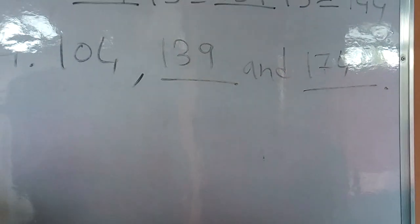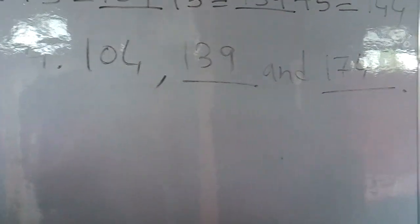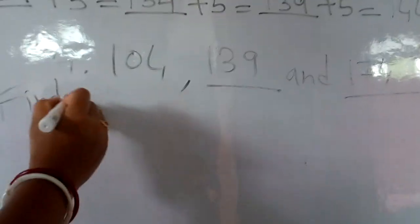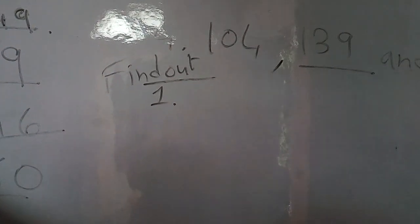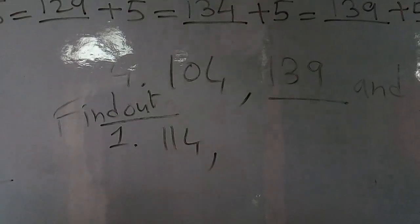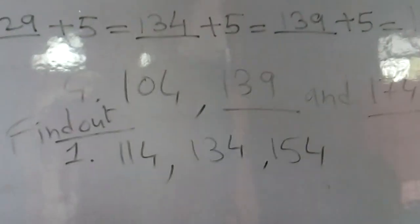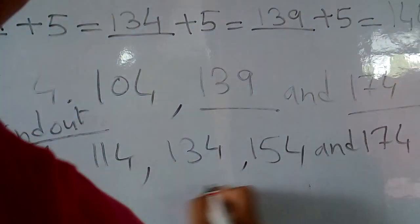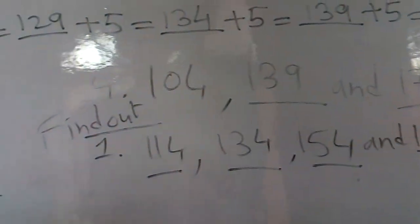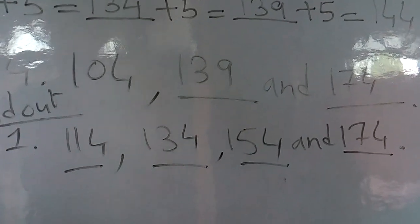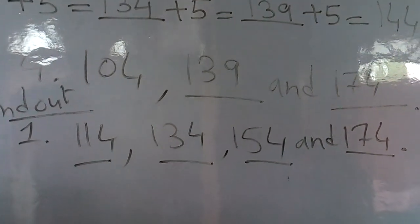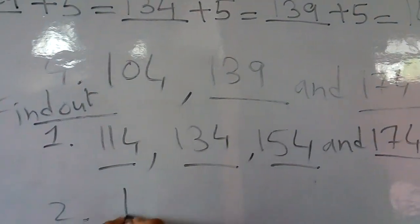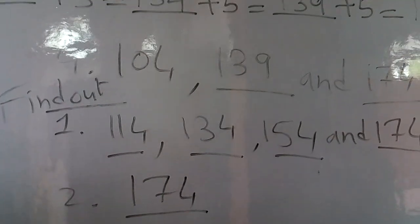In 'Find Out,' the first question is: Taru and Bani jump on which numbers equally? The common numbers where both Taru and Bani are jumping are: first 134, next 154, and 174. So these four numbers they jump together. The next question: is there any number where all 3 of them jump? That number is 174 — this is the number where all 3 will cross together.